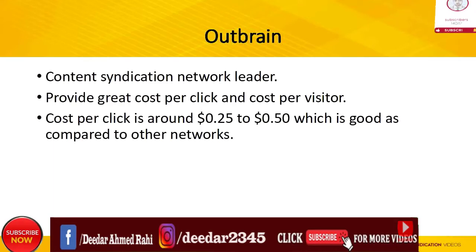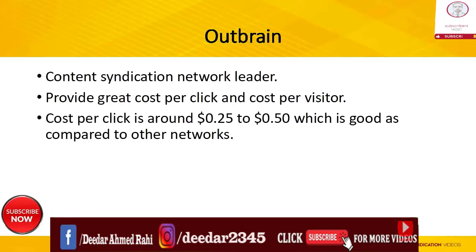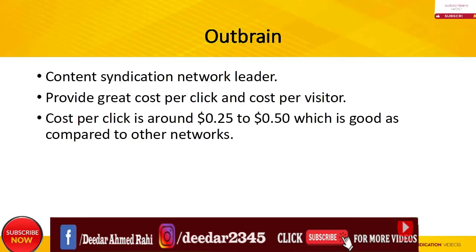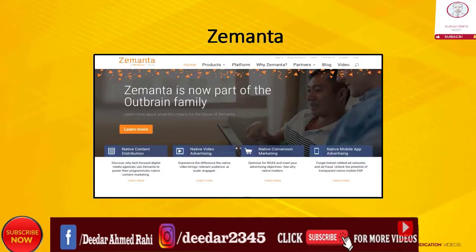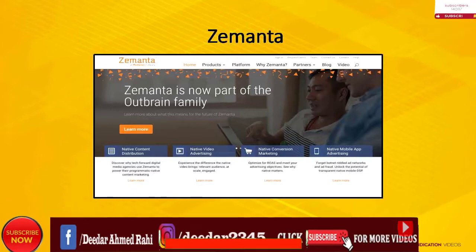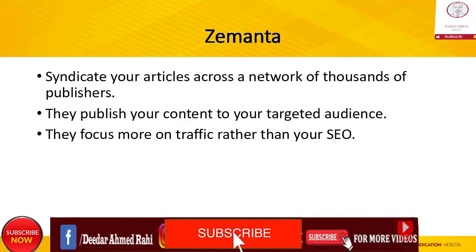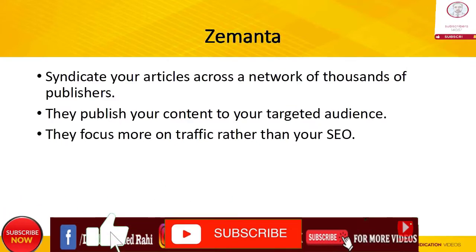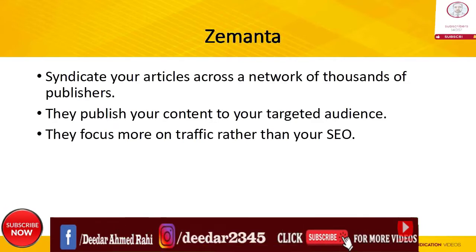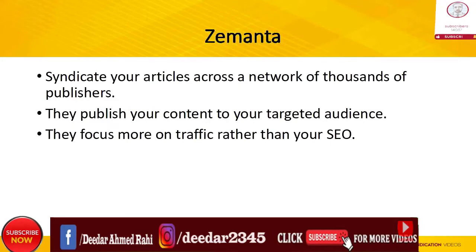The second syndication network is Zemanta. Zemanta is similar to Outbrain. Your articles will be syndicated across a network of thousands of publishers, which includes popular news sites and blogs. Zemanta does all the work for you. After submitting your content, Zemanta works by publishing your content to your targeted audience. The best thing is, you have complete control of the images as well as the title for your articles.